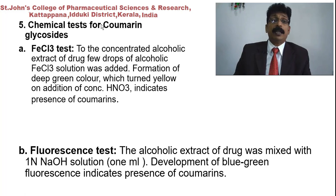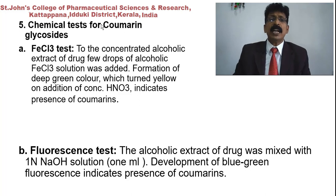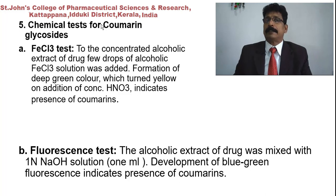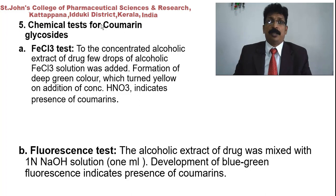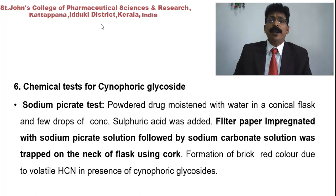Chemical tests for coumarin glycosides: ferric chloride test — to the concentrated alcoholic extract of the drug, a few drops of alcoholic ferric chloride solution are added. Formation of deep green color which turns yellow on addition of concentrated nitric acid indicates presence of coumarins. Fluorescent test — the alcoholic extract of drug is mixed with 1 ml of 1N sodium hydroxide solution; development of blue-green fluorescence indicates presence of coumarins.